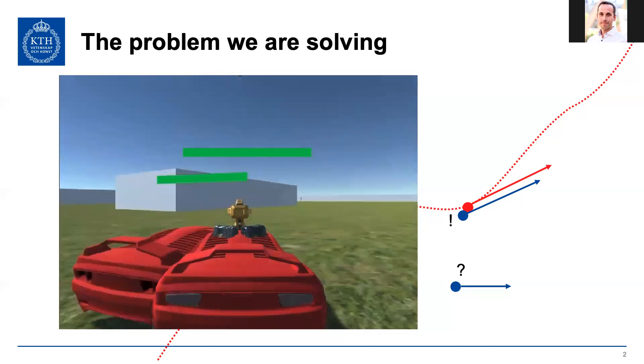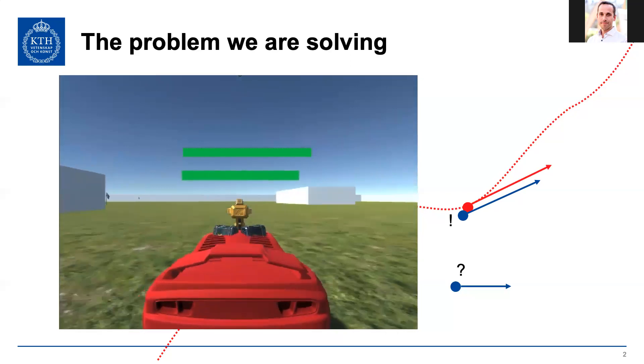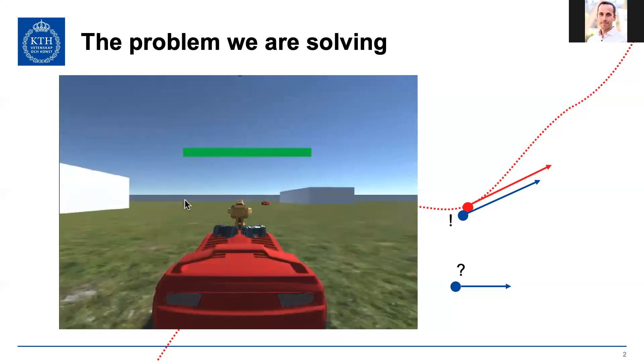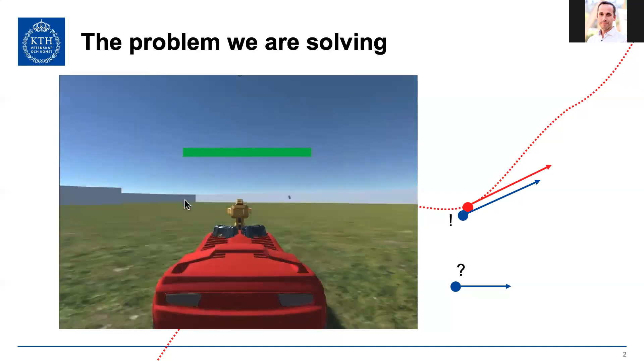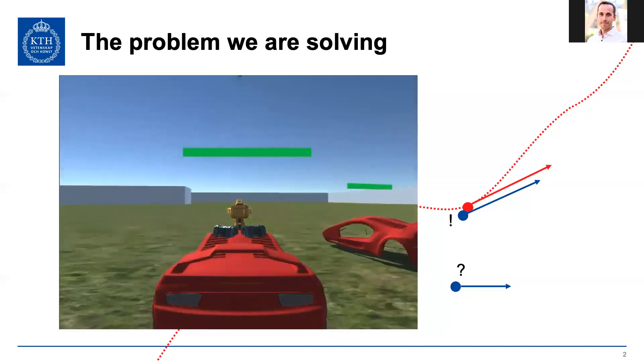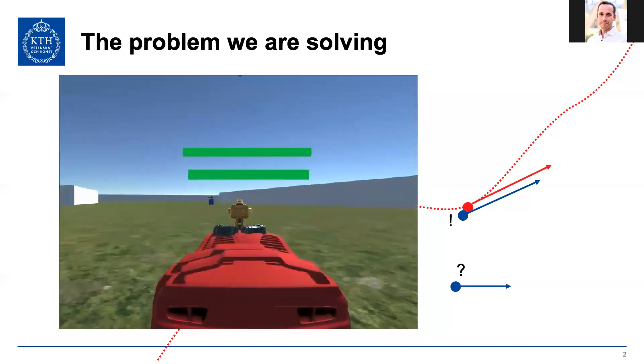We push it to the side and it converges once again, and then we push it forward, so now it has to drive back and converge towards the given trajectory. So this is what we're aiming for.